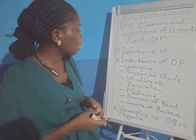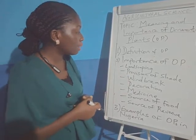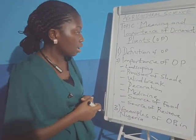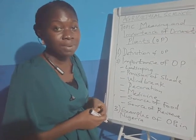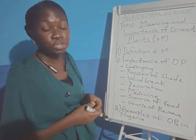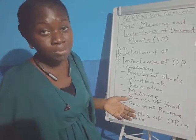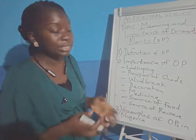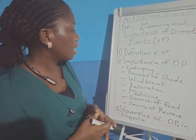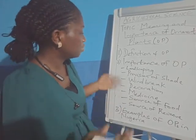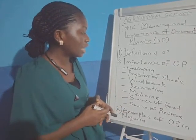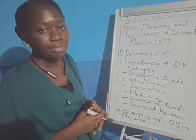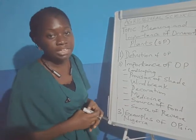So we discussed the definition of ornamental plants — plants which include trees, shrubs, and herbs that are used for different purposes by man — and the different importance and uses of ornamental plants. Thank you for listening.